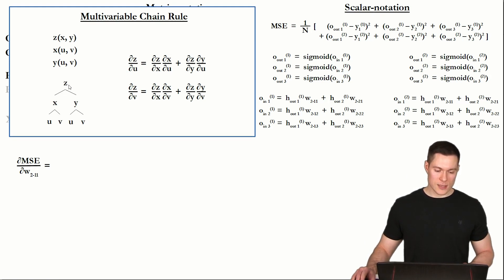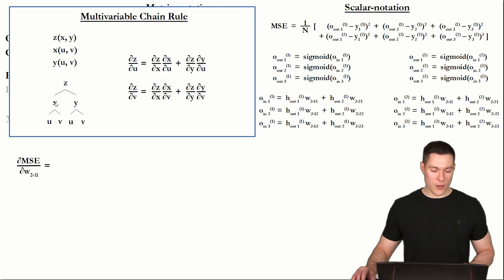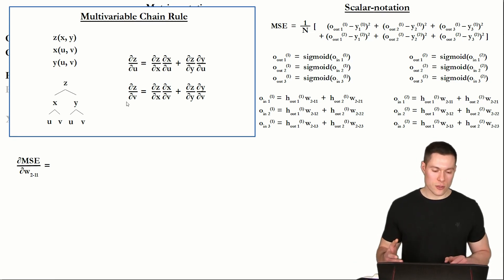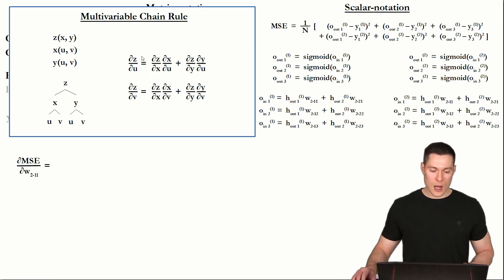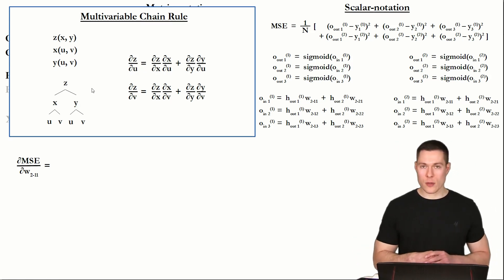In the tree diagram, z depends on x and y, and x and y in turn depend on u and v. To determine the partial derivative of z with respect to u, you consider those two paths and add them together. Intuitively this makes sense: if you want to know how z changes when you slightly increase u, and since u affects z over two paths, you add both contributions together. That's how the multivariable chain rule works.